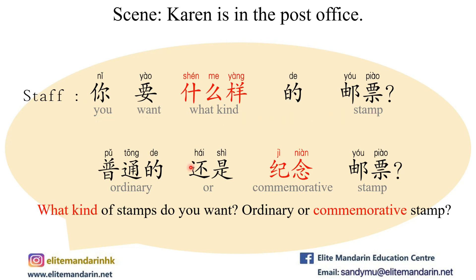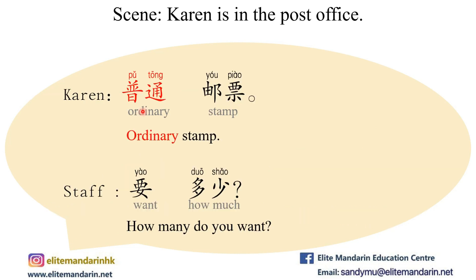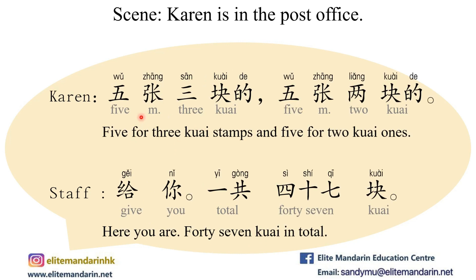邮票。 普通的还是纪念邮票。 你要什么样的邮票？ What kind of stamps do you want? Ordinary or commemorative? 五张三块的，五张两块的。 Five for three kuai stamps, and five for two kuai ones.